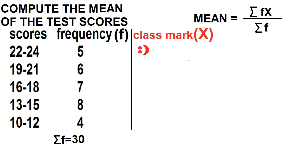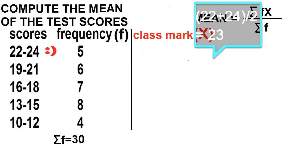To find the class mark, add the lower limit and the upper limit and divide it by 2. So 22 plus 24 is 46 divided by 2 is 23.